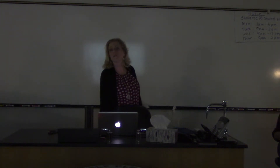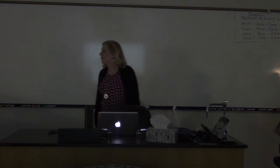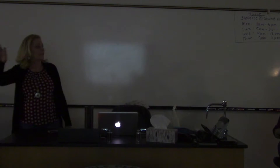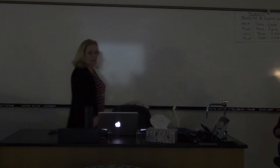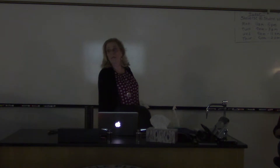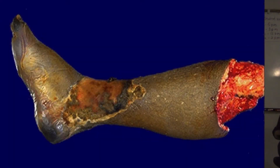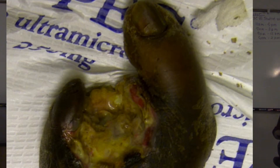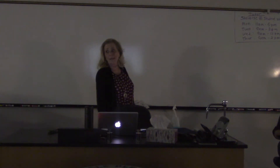Wet gangrene is mostly liquefactive necrosis — the typical foul-smelling, oozing foot infected with several different kinds of bacteria. It could also be in a body cavity — you can get this kind of wet gangrene in internal organs. This would be a person who had diabetes — you can see basically their whole bottom part of the leg became gangrenous because there just wasn't enough blood flow. Here's another person with diabetes and you can see what happened — it's more of a wet gangrene.